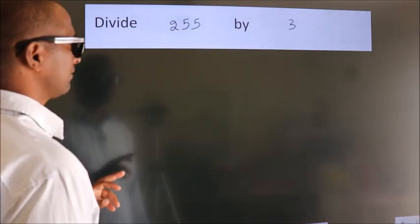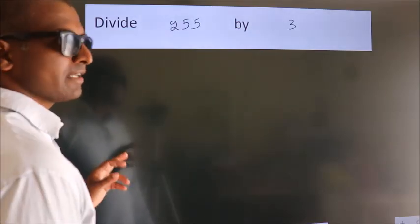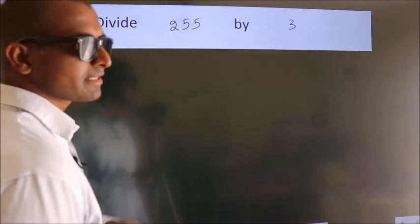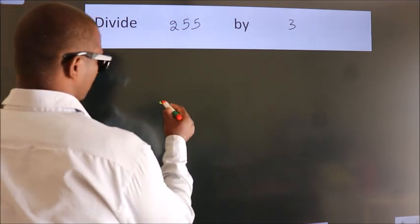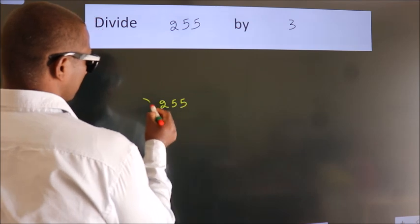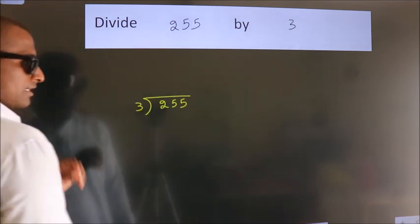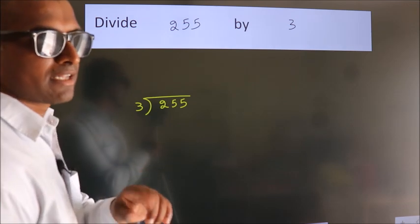Divide 255 by 3. To do this division we should frame it in this way. 255 here, 3 here. This is your step 1. Next.